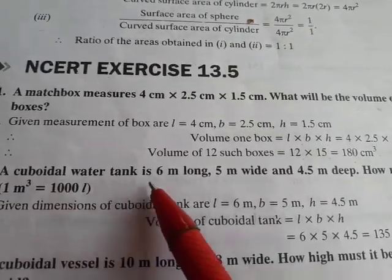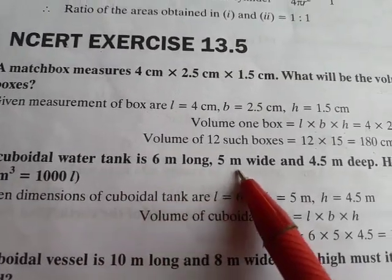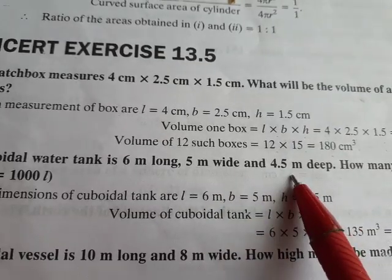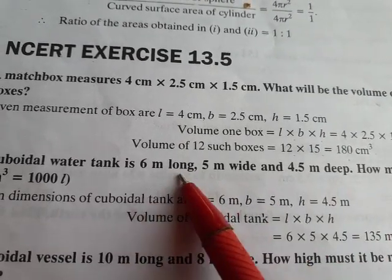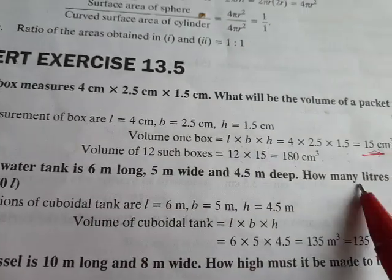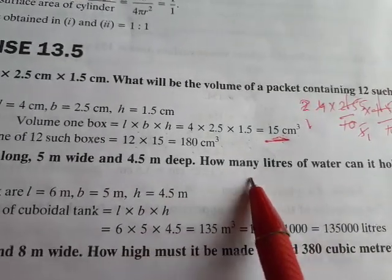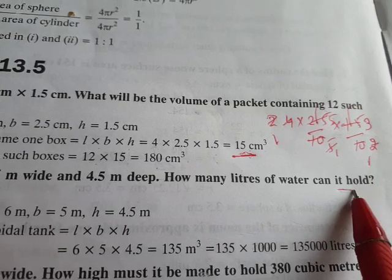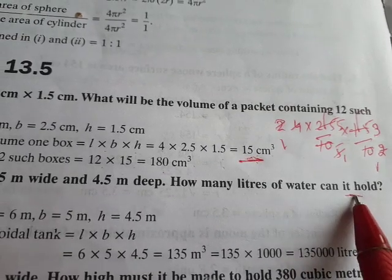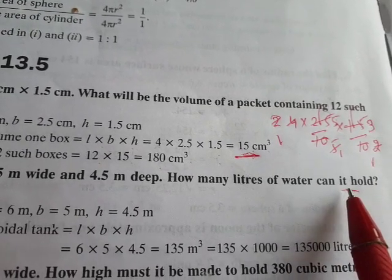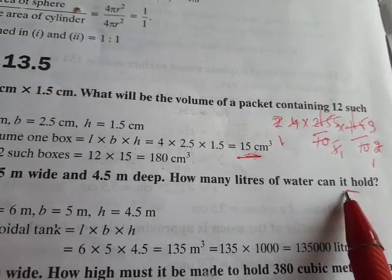Now next. A cuboidal water tank is 6 meters long, 5 meters wide, and 4.5 meters deep. You have given length, breadth, and height. How many liters of water can it hold? How much water can it hold? What do we have to calculate? Its capacity. This is capacity.